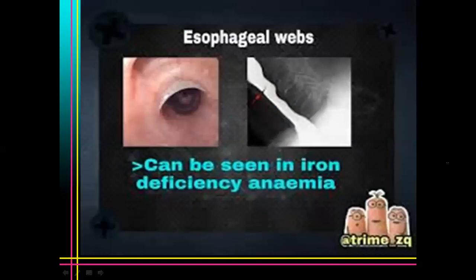Here you can see the X-ray barium swallow showing web formation in the upper end of the esophagus. This is the endoscopic view of the esophageal web — this is the web formed at the upper end of the esophagus.